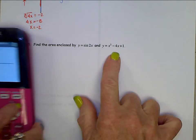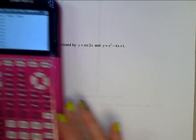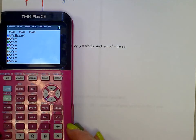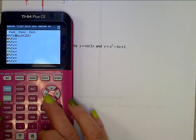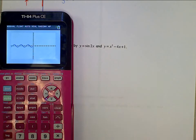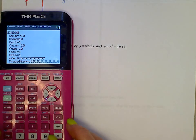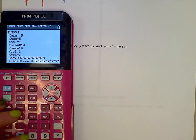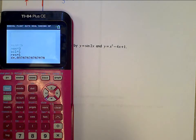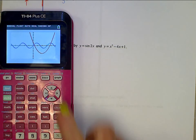So find the area enclosed by y equals sine 2x and y equals x squared minus 4x plus 1. So go ahead and get those in your calculator. I'm going to standard viewing window here. I may need to adjust that. Oh, that's pretty tiny. I'm going to enlarge this. I'm going to change my window to be negative 5 to 5 across the board.